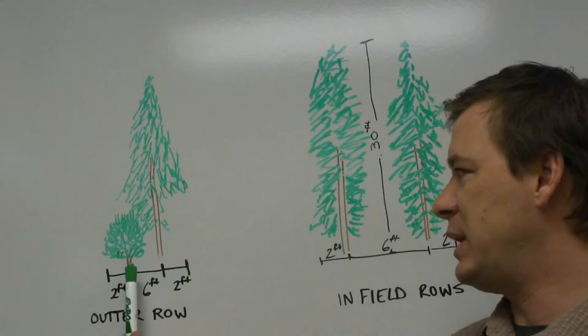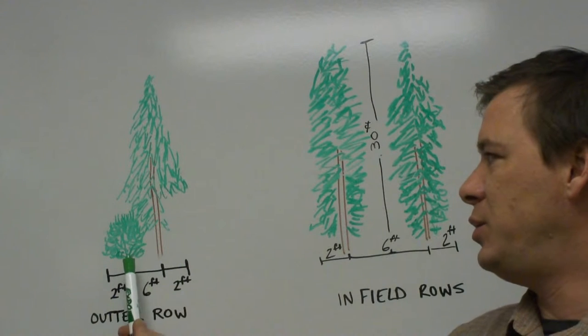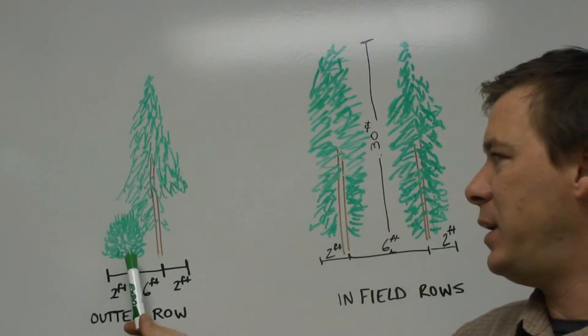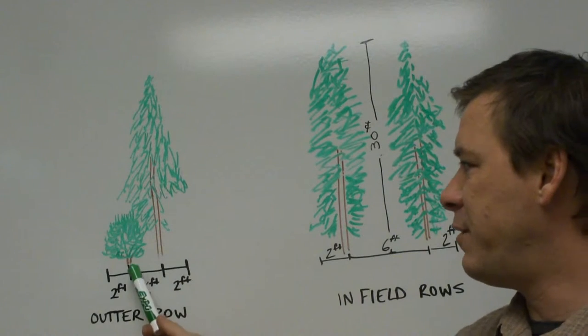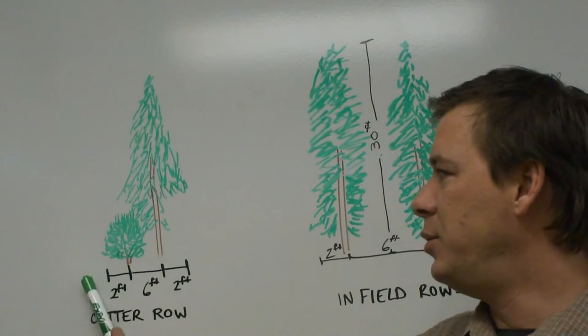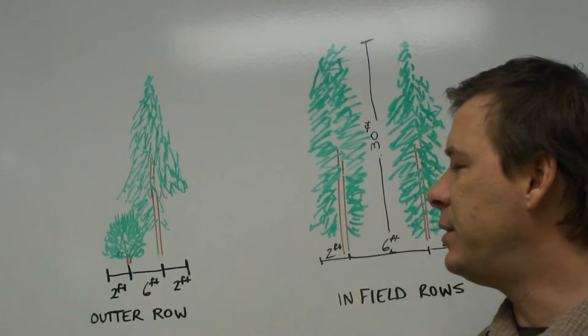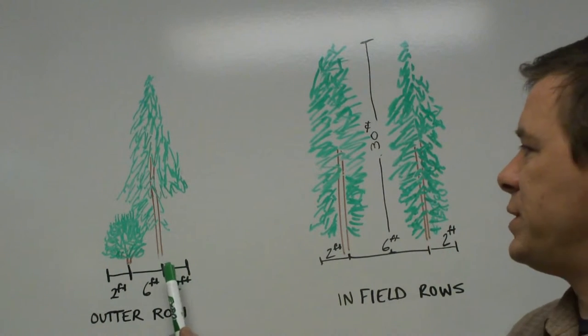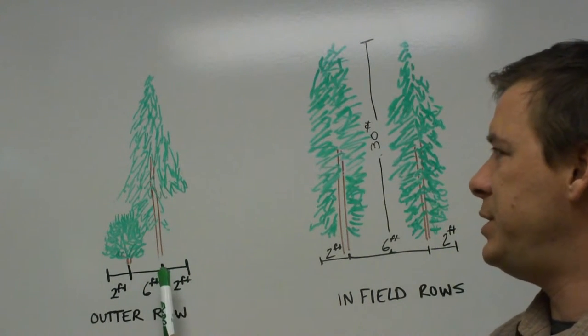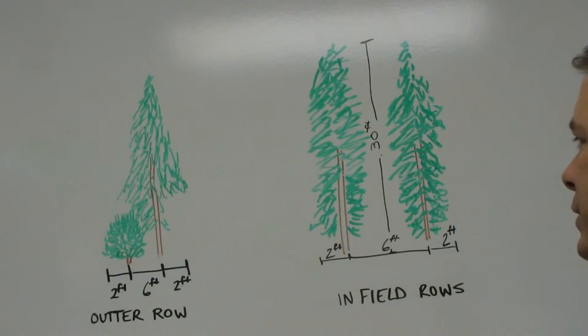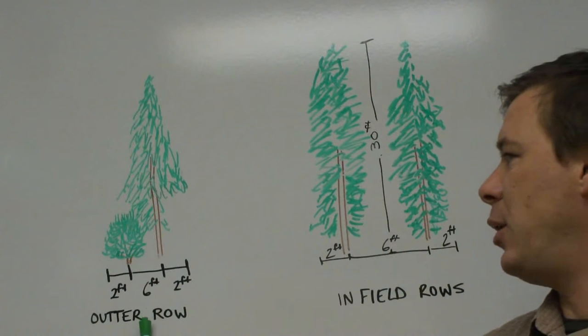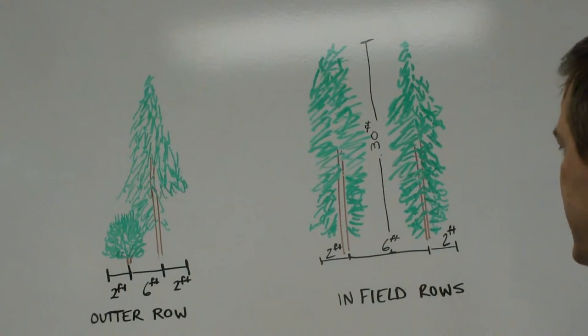So again, starting with the outer row, we chose a lilac species due to its height, overall height, its density and its non-suckering habit. So therefore you won't start to see new sprouts starting to creep out into the fields. And then we chose a hybrid poplar species for its fast growing and height attributes. That comprises the outer row of the field demonstration site.